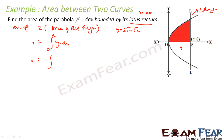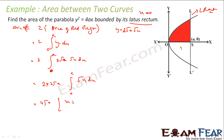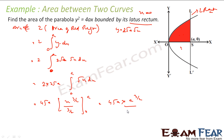Since y² = 4x, y equals 2√(ax), or equivalently √(4x). So the area becomes 2 × 2√a × integral of √x dx from 0 to a, which equals 4√a × [x^(3/2) / (3/2)] from 0 to a. Solving this gives 4√a × (a^(3/2) × 2/3), which simplifies to 8a²/3.